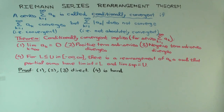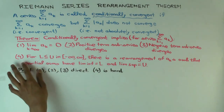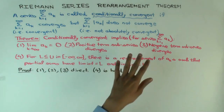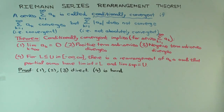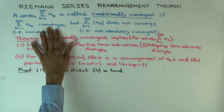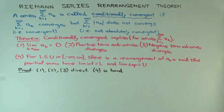So here's the theorem. Part 4 is the real theorem; parts 1, 2, and 3 are preliminary. Part 1 says the terms have to go to zero, which actually just follows from convergence — if a series converges, the terms have to go to zero.